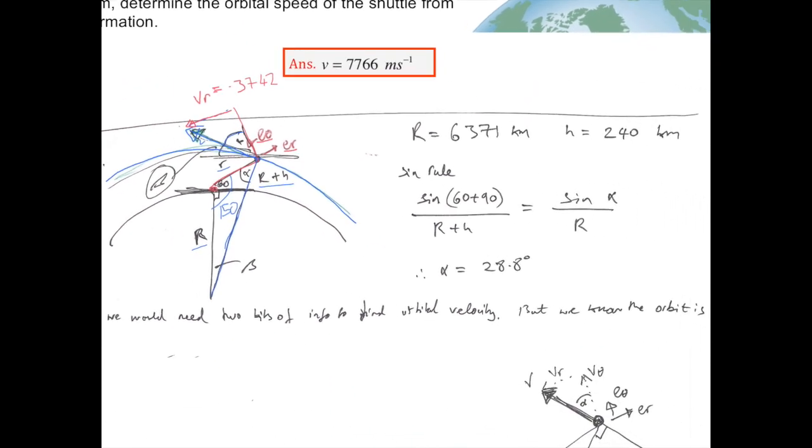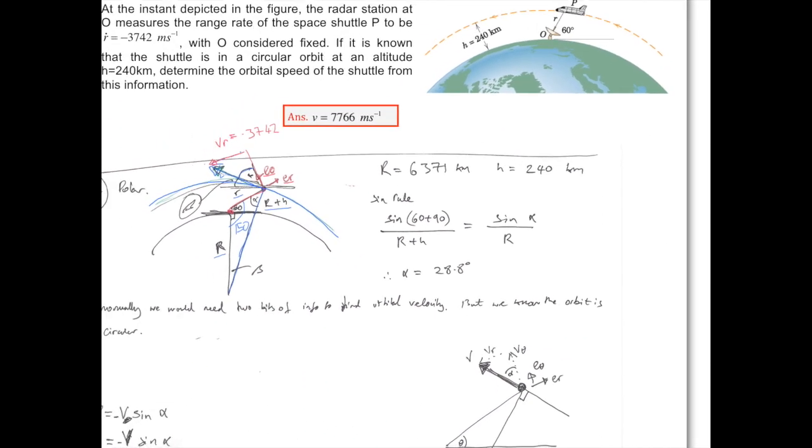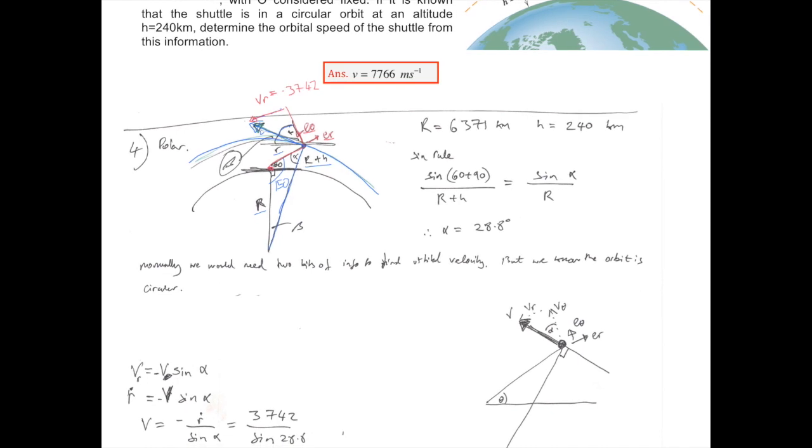Using the sine rule, we can say that sine of 150 divided by r plus h is equal to sine of alpha, which is the angle we want, divided by r. So we can find out alpha: 28.8 degrees.